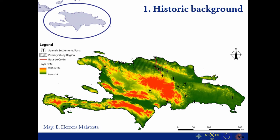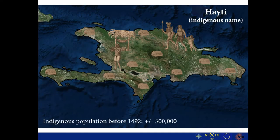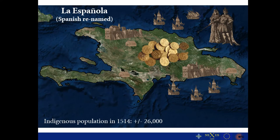As perhaps you might know, this was the first island in the Caribbean that was properly landed by Columbus and his men back in 1492. Our research area is actually located in between the main and first forts and villas built by Columbus and his men during the invasion of the island and the further invasion of the Americas. This island was formerly known by the indigenous population as Haiti, and before 1492, the most conservative estimate is that the population was around half a million people.